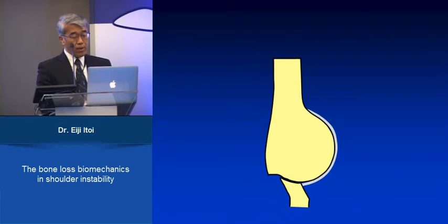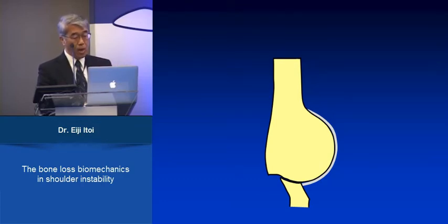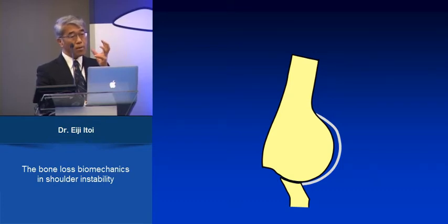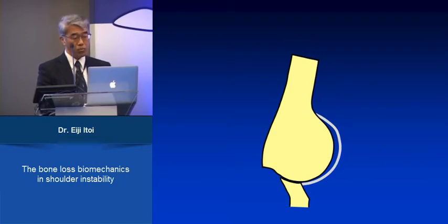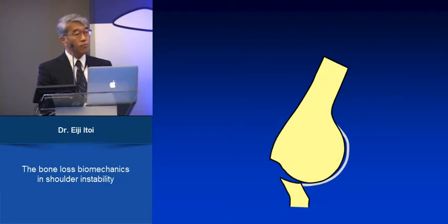With a large bony defect of the glenoid, if you repair the Bankart lesion, the humeral head is still stable in the glenoid socket at end range of motion because the capsule is tight, preventing anterior translation of the head. However, if you bring the arm to mid-range, the capsule becomes lax and doesn't hold the head anymore. The head starts to slide anteriorly because the socket is shallow due to the large bony defect. So the glenoid bony defect is related to mid-range instability, not end-range instability.